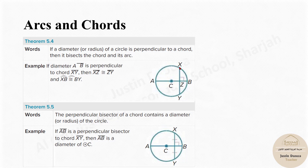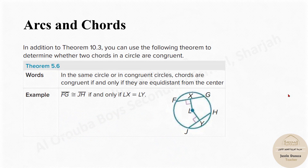If AB is a line that is perpendicularly bisecting the chord, then it has to be a diameter, or CB must be the radius. The last theorem is about congruent chords: in a circle, if the chords are equidistant from the center, then they are equal. So if FG and JH are congruent if and only if the distances from the center to each chord — X to L and Y to L — are equal.